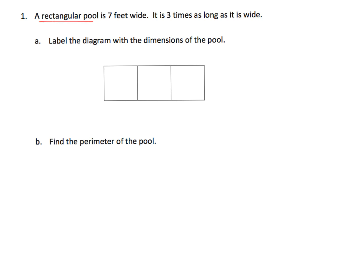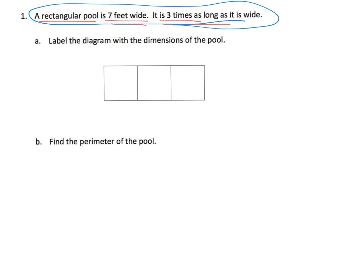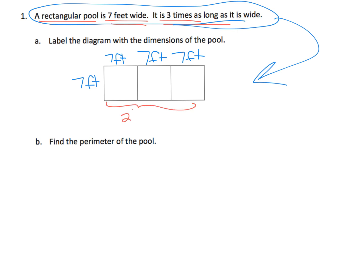So we have a rectangular pool. It's seven feet wide and it's three times as long as it is wide. This direction is the length and this direction is the width. They've drawn us the picture that it should look. You can see that this little unit length right here is seven feet, and this pool is three times as long, so we've got one, two, three. That means this is seven feet, this is seven feet, and this is seven feet, so the entire length is 21 feet.